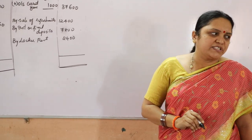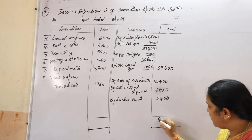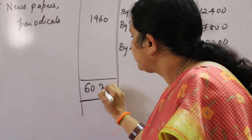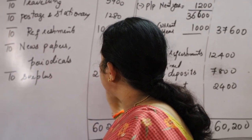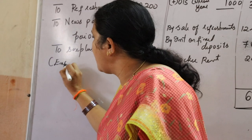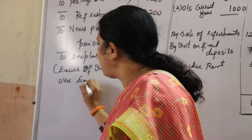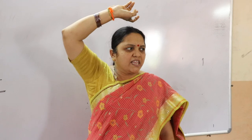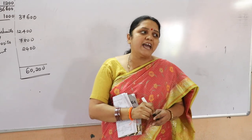Now finding the grand total on the income side gives 60,200. Income minus all expenditures gives excess of income over expenditure of 27,960. This is called surplus. This surplus is transferred to the balance sheet and added to the capital fund on the liability side of the current year balance sheet.